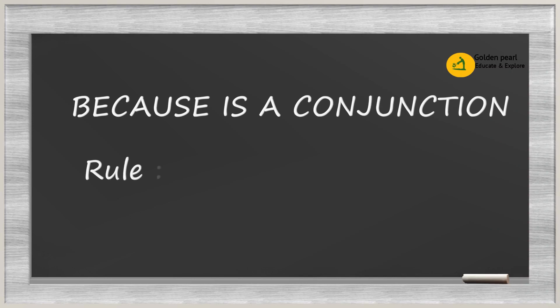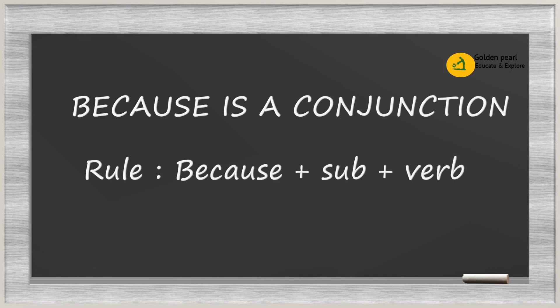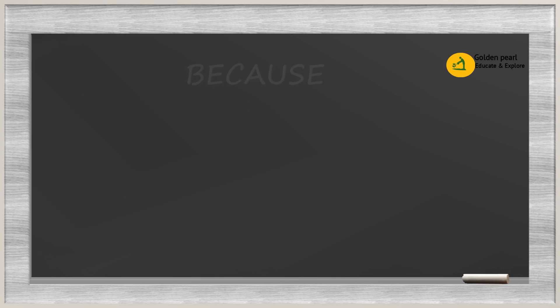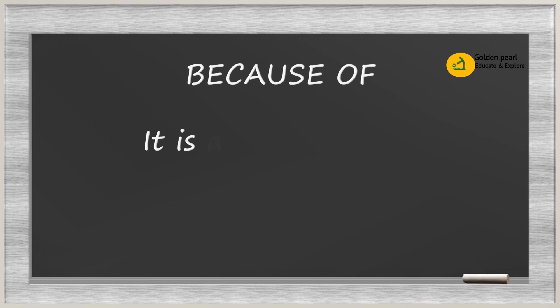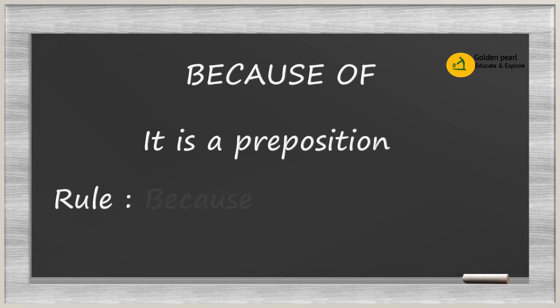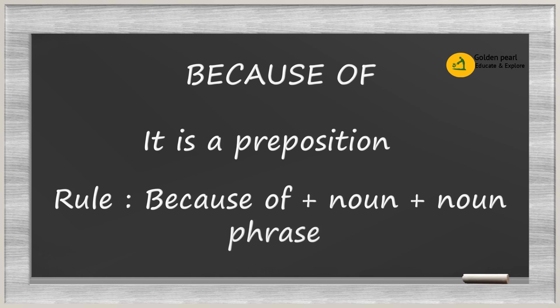Because it's a conjunction, and because is one of the conjunctions, if you use the rule: because plus subject plus verb. Because of, on the other hand, is a preposition. So because of plus noun — you use a noun phrase.